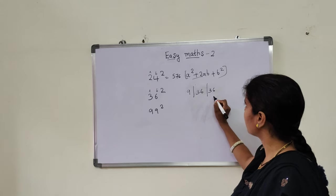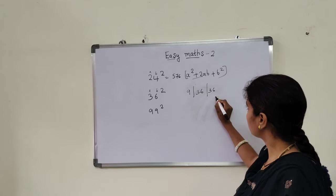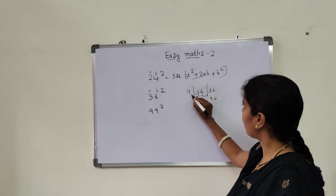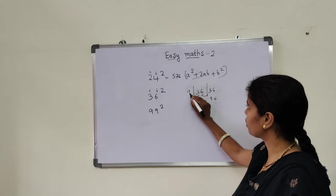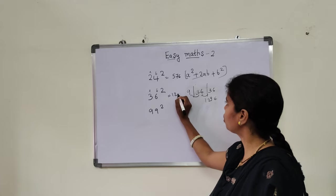6 × 6 are 36. Simply you should do 6, how much? 6 you should put here. 3 you should shift here. It will become 9. And 3 here you should shift. 9 plus 3 is 12. Answer is 1296.